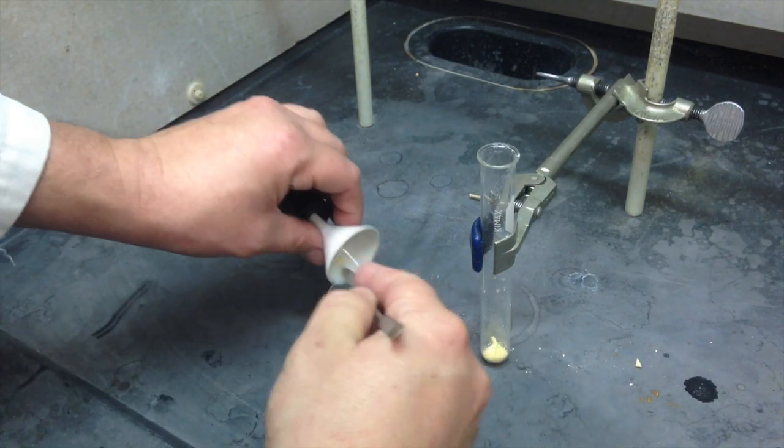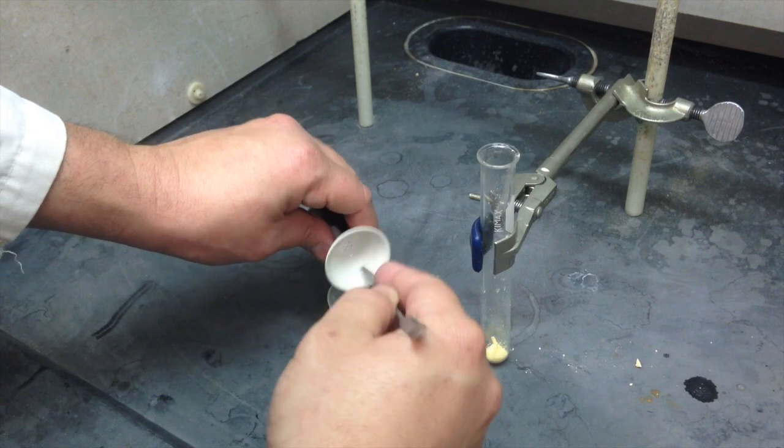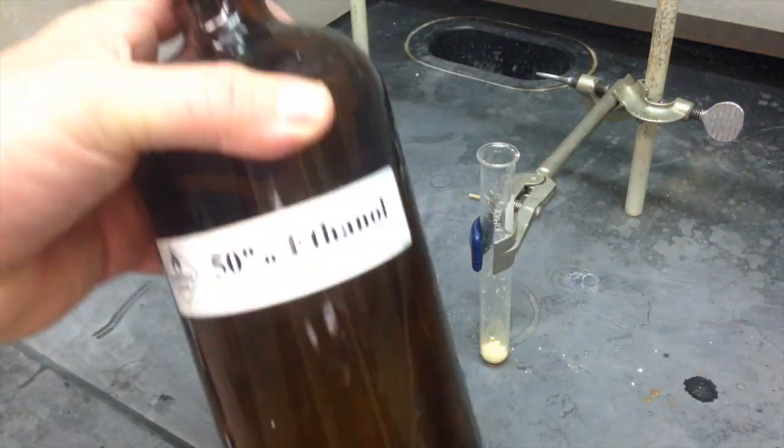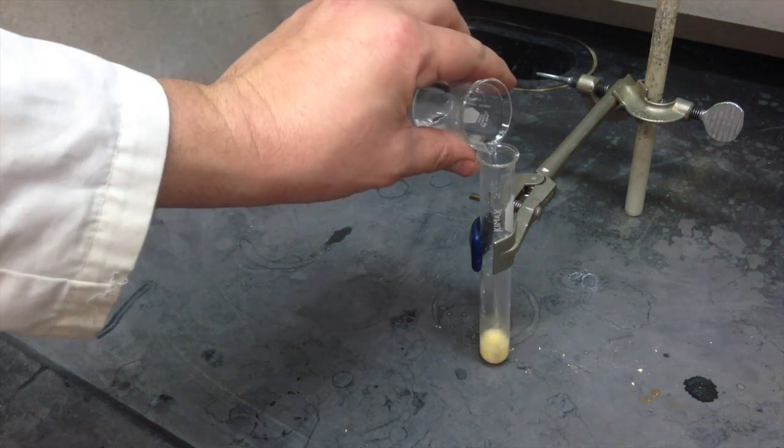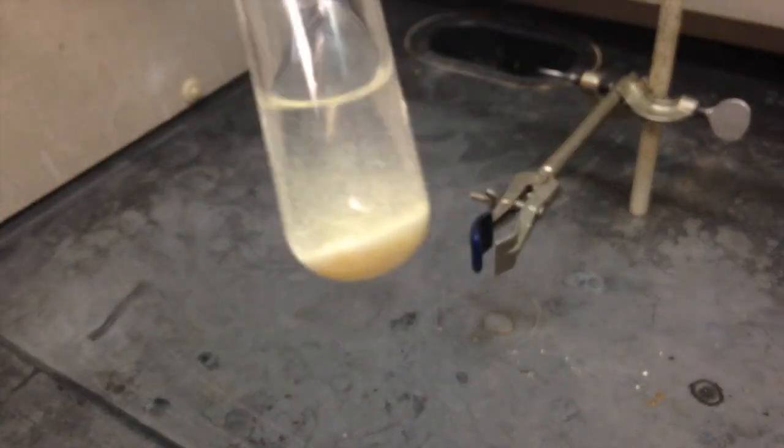To do this, we need to transfer this to a nice, new, clean test tube. I recommend transferring it to a weighing cup first. It makes your life a lot easier. We're going to do our recrystallization in hot 50% ethanol, 50% water. But it doesn't really dissolve it.